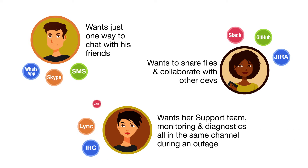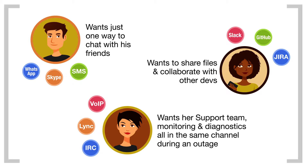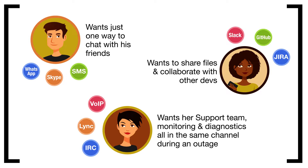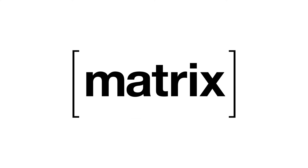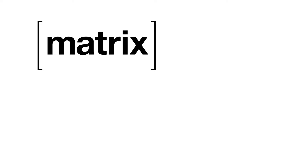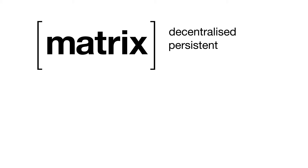Nowadays, there are many new tools that help us communicate and collaborate, but what most of them have in common is that they do not talk to each other. That's why we've created Matrix. Matrix is an open standard for decentralized, persistent communication over IP.